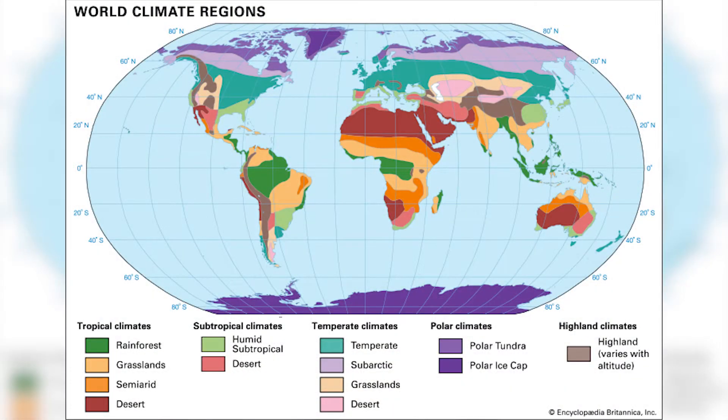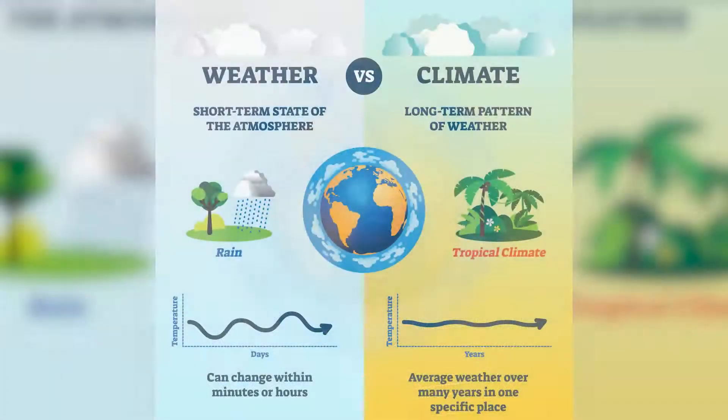Climate, on the other hand, refers to the long-term averages of temperature, humidity, and rainfall patterns over seasons, years, or decades that have come to define our planet's local, regional, and global weather. So weather reflects short-term conditions of the atmosphere, while climate is the average daily weather for an extended period of time at a certain location. Weather can change from minute to minute, hour to hour, day to day, and season to season. Climate is the average of weather over time and space.